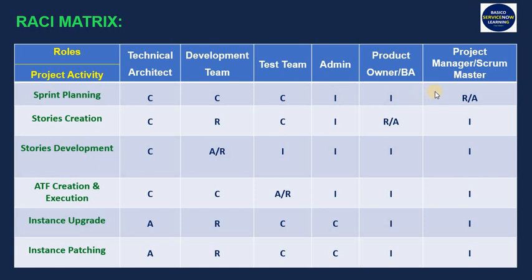For the activity of story creation, R and A move to the product owner — meaning the business analyst is Responsible for creating the stories and is also Accountable for that activity, taking ownership of it. We can give R and A to a single role, or to separate roles — it depends on what roles and responsibilities are being assigned to whom. In this way we can prepare a RACI matrix.